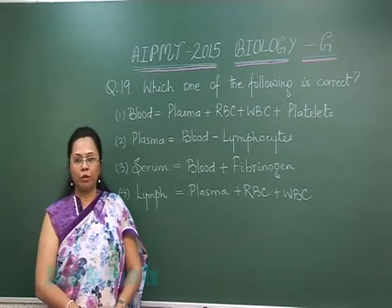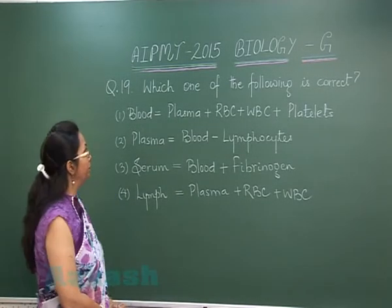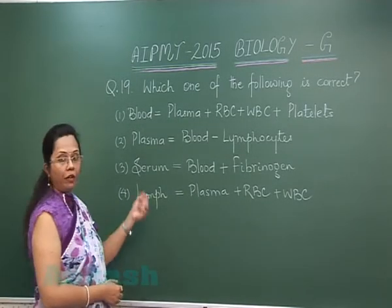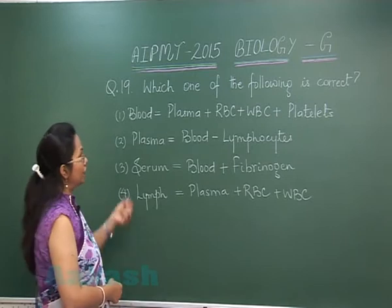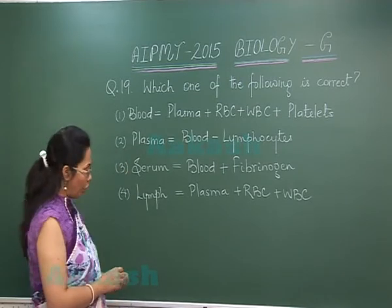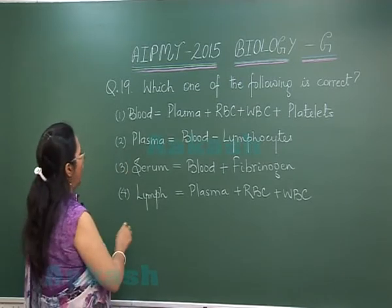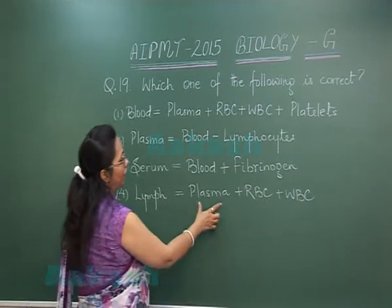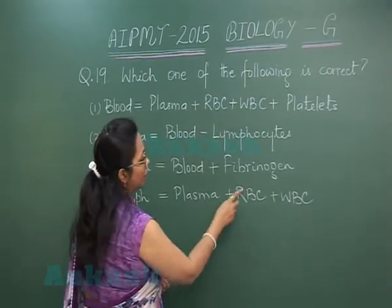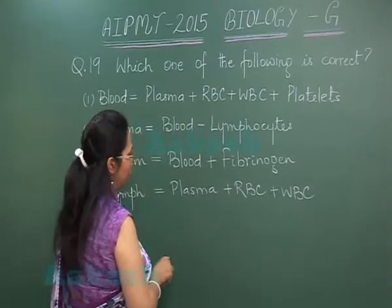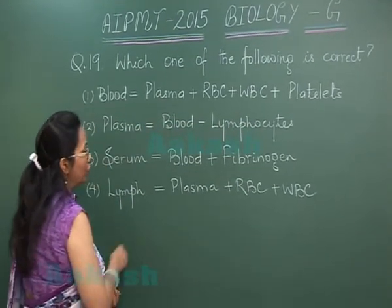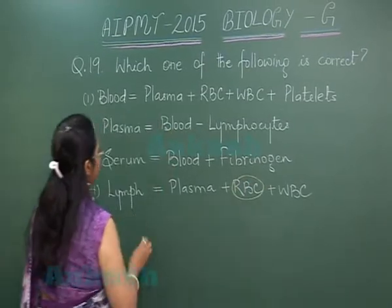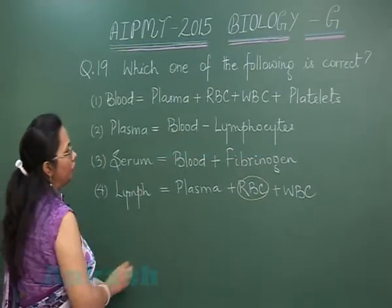Let us discuss question number 19. We have to find the correct one out of these four options. Lymph is plasma plus RBC and WBC. Now we know lymph does not have RBCs. Serum is blood plus fibrinogen — but serum would be without fibrinogen, because it is formed after the clotting of the blood.